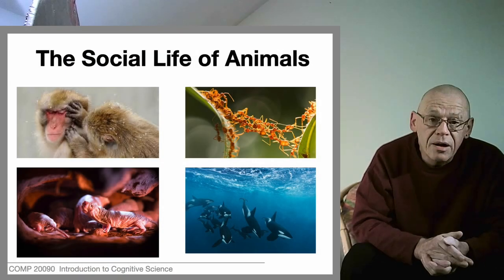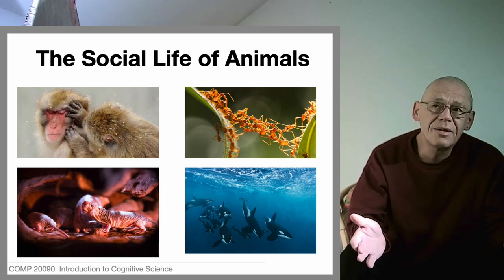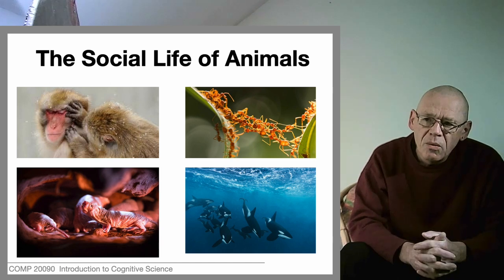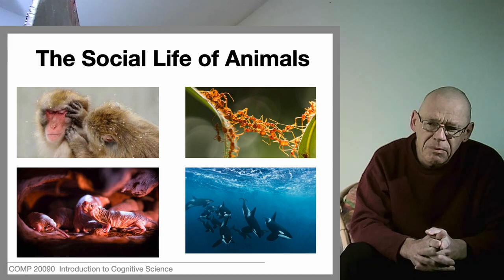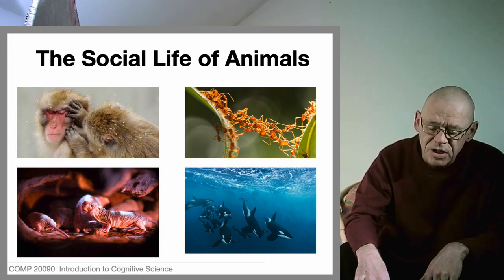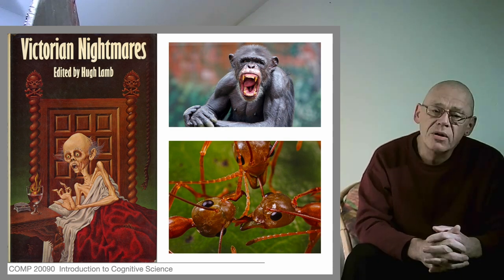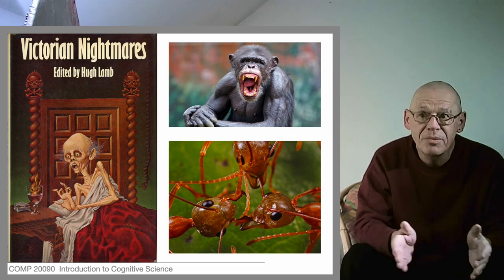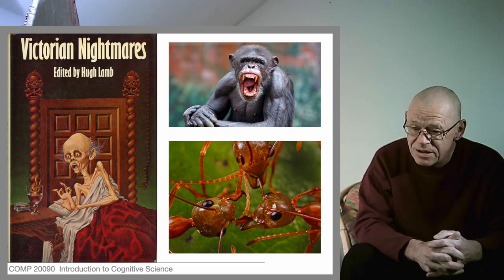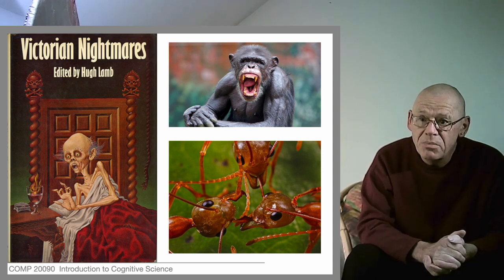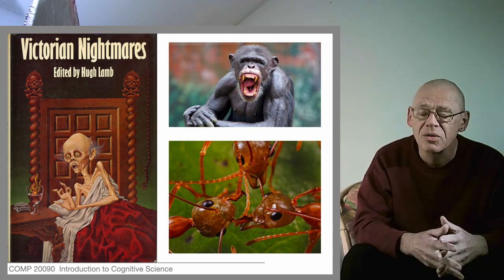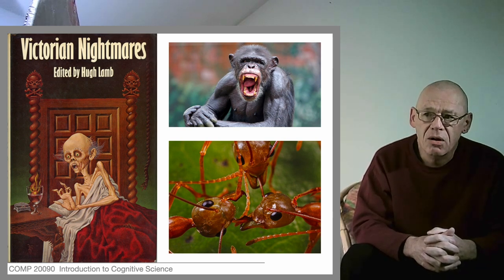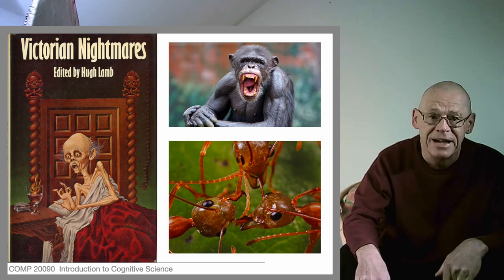We're going to begin by having a look at what we can learn from the social lives of animals. Animals come in a bewildering variety of forms with all kinds of unimaginable social lives. I chose to pick out two animals that played a particular role in how humans came to understand themselves and their social organization — two animals that gave the Victorians nightmares: the chimpanzee and the ant.